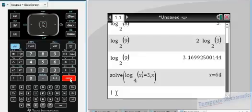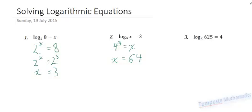The final example that we're going to look at for right now is log base x of 625 equals 4. Once again, I'm going to write this in exponential form. So, I have x to the power of 4 equals 625.